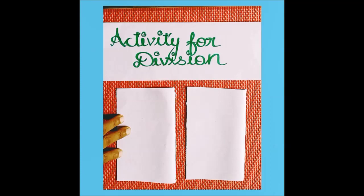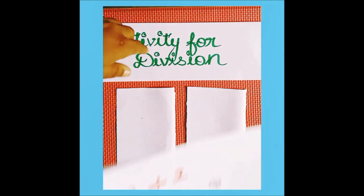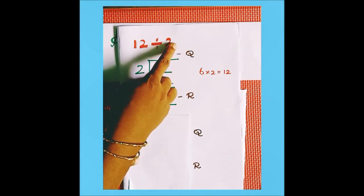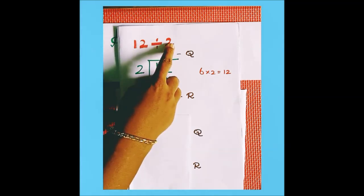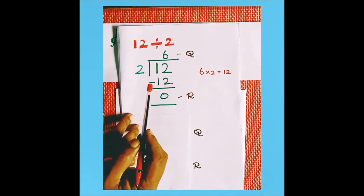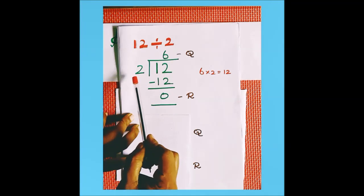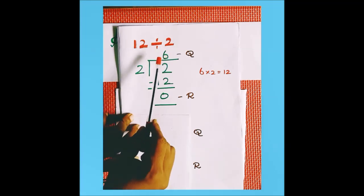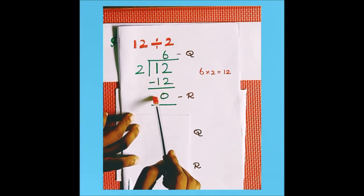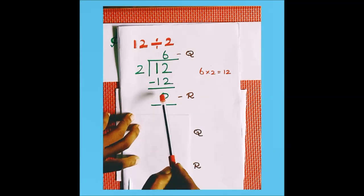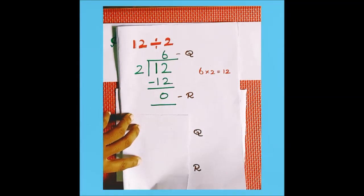My dear children, in today's activity we are going to discuss the concept of division. We are going to see one example sum: dividing 12 by 2. The dividend is 12, the divisor is 2. In the 2-table, 12 comes 6 times. So the quotient is 6 and remainder is 0. Now we are going to do an activity for this division.